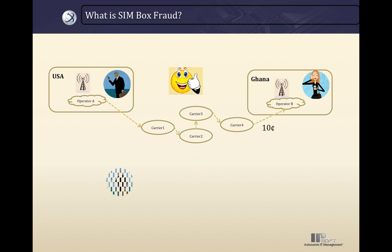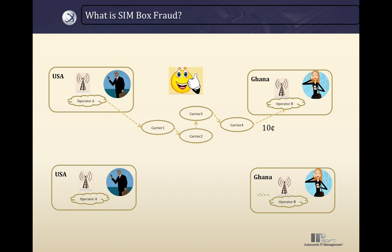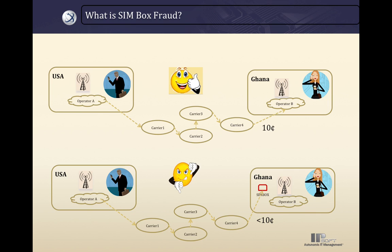Now let's look at a fraudulent scenario. The fraud occurs when Carrier 4 forwards the call to Ghana over the internet to a SIMbox, and the SIMbox transforms the incoming international call into a local mobile call to Martha. Local mobile calls cost way less than $0.10, so Operator B loses the termination fee from this call. Fraudulent carriers, like Carrier 4, make profit by offering low-cost international and national terminations, advertising attractive rates as they do not pay the higher termination fees that regulations would require.